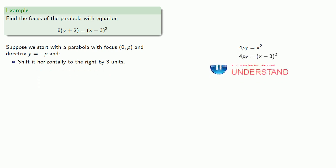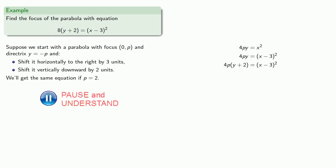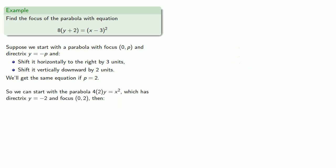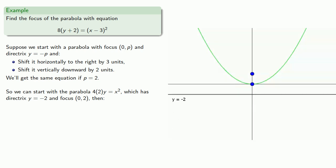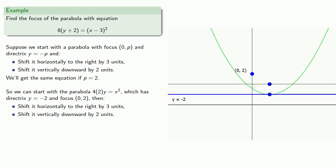After shifting right by 3 units, our equation updates accordingly. We also want (y + 2) instead of y, so we shift vertically downward by 2 units, which updates our equation again. We want coefficient 8 instead of 4p, which means p is equal to 2. So we start with the parabola 4(2)y equals x squared, which has directrix y equals negative 2 and focus at (0, 2). We then shift this parabola right 3 units, then down 2 units, which moves our focus to (3, 0) and the directrix to y equals negative 4.